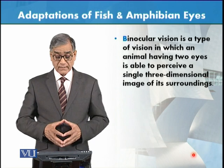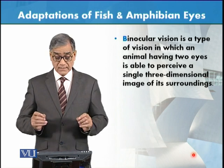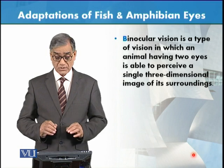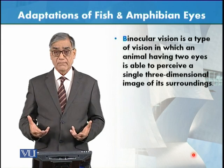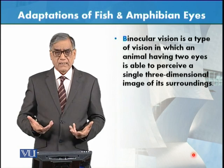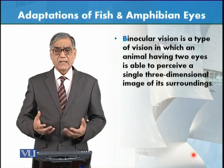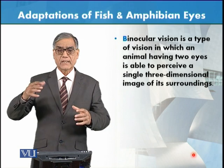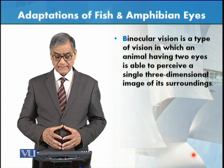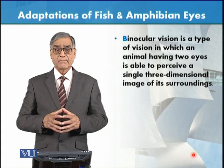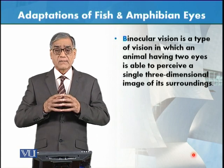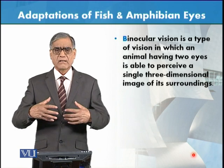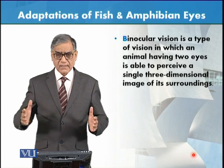Binocular vision وہ ability ہے in which an animal having two eyes is able to perceive a single three-dimensional image of the surroundings۔ Three-dimensional image — جیسے ہم 3D بھی کہتے ہیں — اس کی depth کا بھی احساس ہوتا ہے کہ یہ کتنی موٹی ہے، کتنی اونچی ہے۔ تو یہ binocular vision fishes اور amphibians میں اس طرح کام کرتی ہے۔